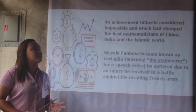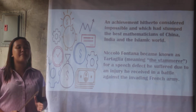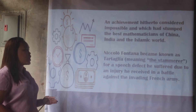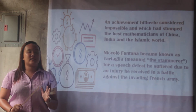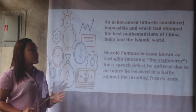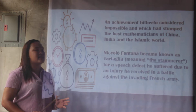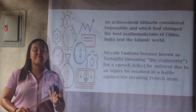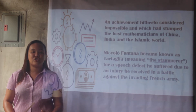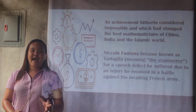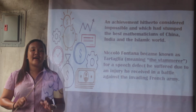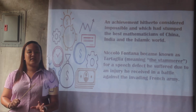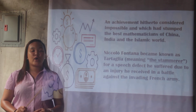This achievement was considered impossible and had stumped the best mathematicians of China, India, and the Islamic world. Nicolo Fontana became known as Tartaglia — meaning 'the Stammerer' — due to a speech defect he suffered from an injury he received in a battle against the invading French army.